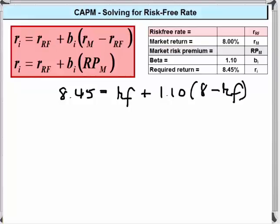Simplifying, we're going to have the risk free rate plus 8.80 minus 1.10 times the risk free rate.